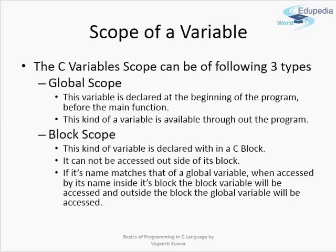The scope of C variables is of three types. One is the global scope. A global variable is declared at the beginning of the program and its scope remains throughout that particular C file. It can be globally accessed within a particular file, and it should be declared just before the main program — before the first function of your program.